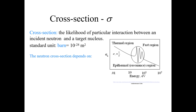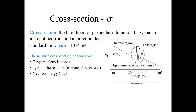The neutron cross-sections basically depend upon the target nucleus or isotope, the type of interaction — that is, capture, fission, scattering, etc. — and the neutron's energy.